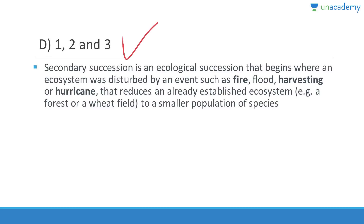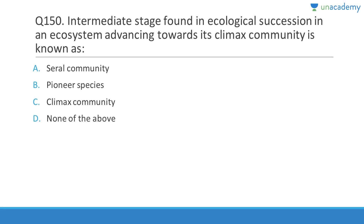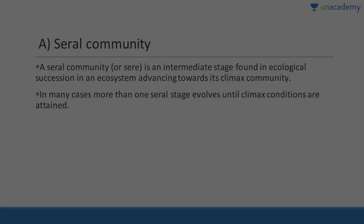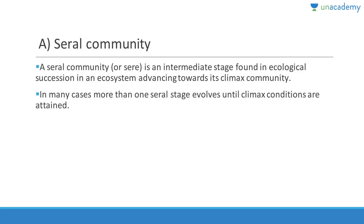Secondary succession is an ecological succession that begins where an ecosystem was disturbed by events such as fire, flood, harvesting, or hurricane, reducing an already established ecosystem to a much smaller population of species. The intermediate stage found in ecological succession advancing towards its climax community is known as a seral community — an individual stage within ecological succession. In many cases more than one seral stage evolves until climax conditions are attained.